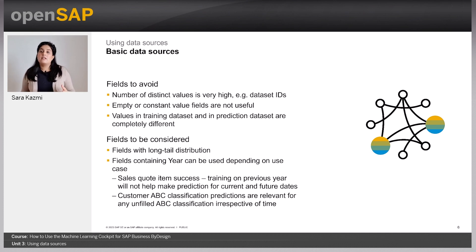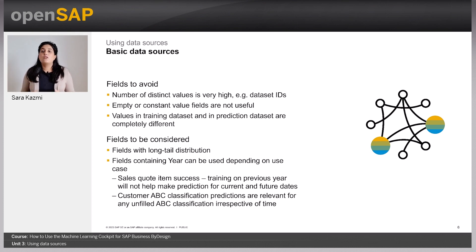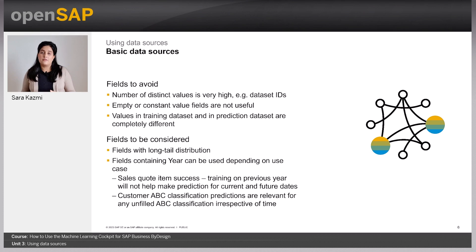Fields containing year can be used depending on the use case. For example, a sales quote items success use case training on a previous year will not help make predictions for current and future dates. However, for a customer ABC classification, predictions are relevant for any unfilled ABC classification irrespective of time.